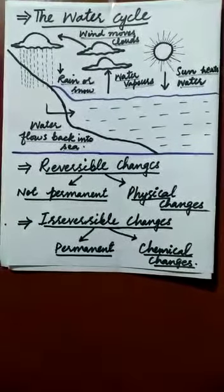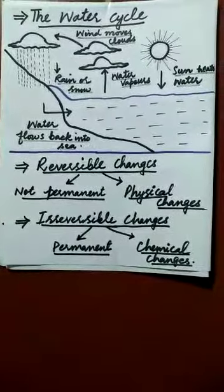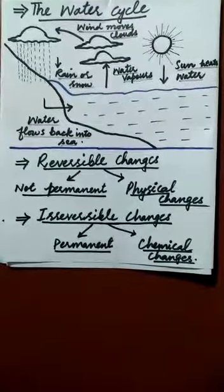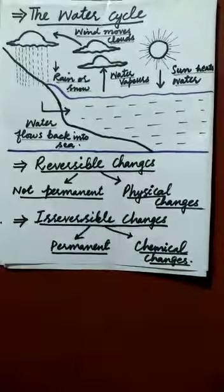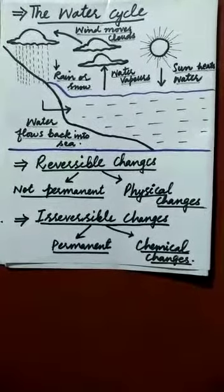You cannot turn a boiled or fried egg back into a raw egg. These are also called chemical changes. These are some examples of irreversible changes.